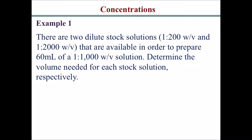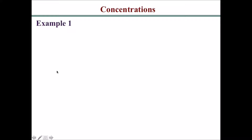Hello, let's take a look at some concentration examples. Example one: there are two dilute stock solutions — one has a concentration of 1 to 200 weight by volume, and the second stock solution has a 1 to 2,000 weight by volume concentration. These are available to prepare 60 milliliters of a 1 to 1,000 weight by volume solution. You want to determine the volume needed for each stock solution. For step one, you want to set up the alligation grid.